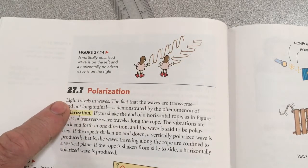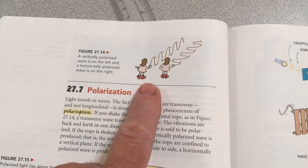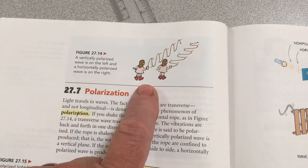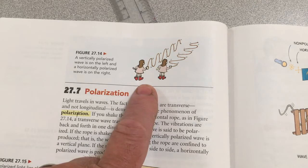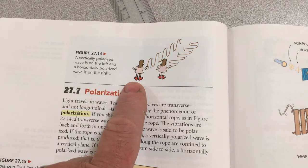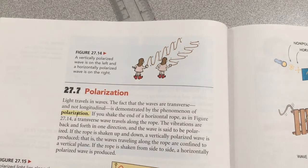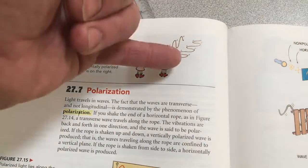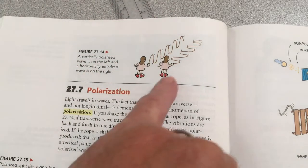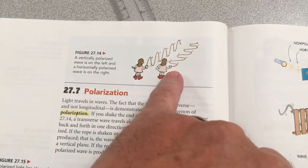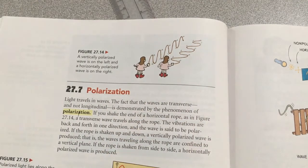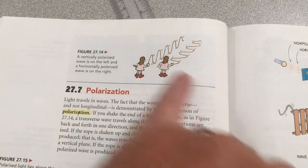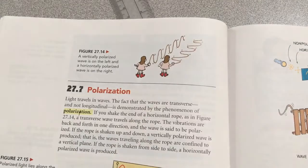In the text, they demonstrate that the girl is shaking the rope vertically on the left here, and that results in a wave that is vertically oriented and vibrating in the vertical plane. In the second rightmost part of the image, she's shaking the rope horizontally, and that results in a wave that is horizontally oriented.